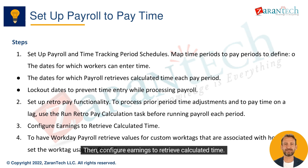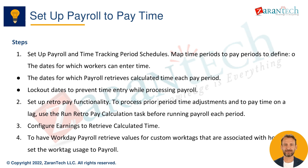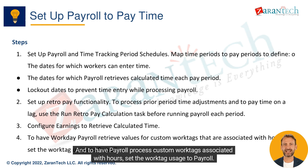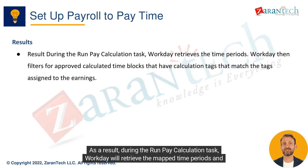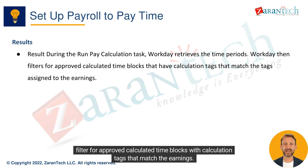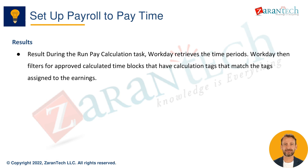Then, configure earnings to retrieve calculated time, and to have payroll process custom work tags associated with hours, set the work tag usage to payroll. As a result, during the run pay calculation task, Workday will retrieve the mapped time periods and filter for approved calculated time blocks with calculation tags that match the earnings.